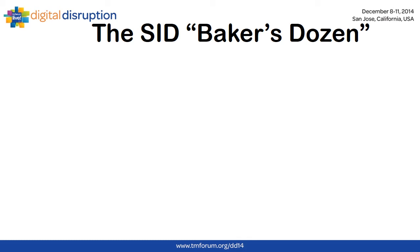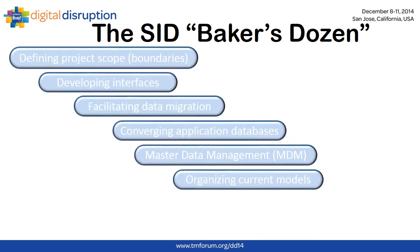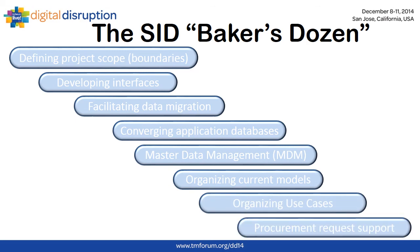We've looked at four common uses of the framework and how they can reduce OPEX, but there are many more, which are part of what I call the SID Baker's Dozen Plus. Here they are. And there certainly are more, such as harmonizing industry models, using the SID with other framework components, and standardizing conformance. Until next time, see ya!